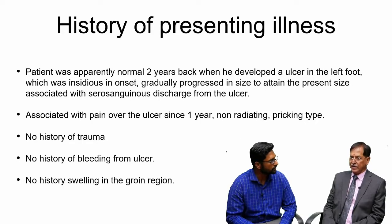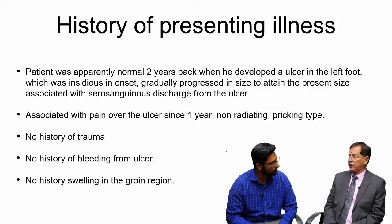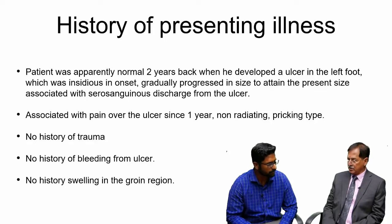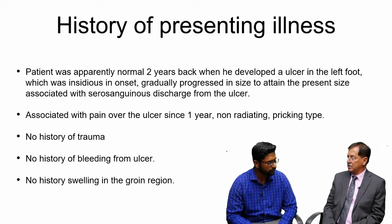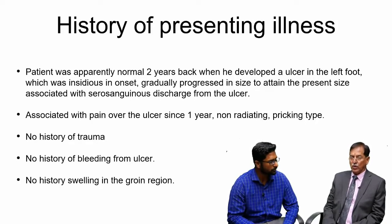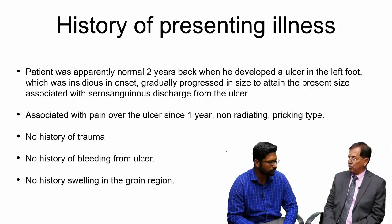When there is ulcer and pain, the possibilities include: infection spreading to adjacent structures causing cellulitis, spreading along veins causing thrombophlebitis, along lymphatics causing lymphangitis, involving the periosteum of the underlying bone causing periosteitis, or involving the bone itself leading to osteomyelitis. Malignant ulcers are also prone to secondary infection, and bone or periosteal involvement can cause pain.